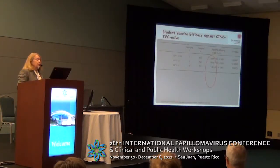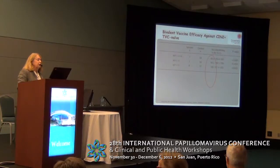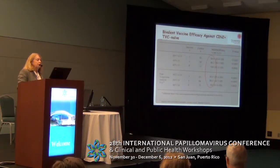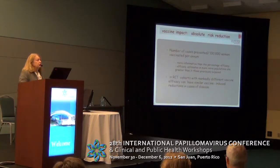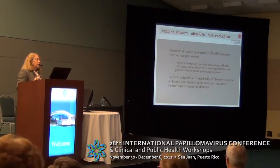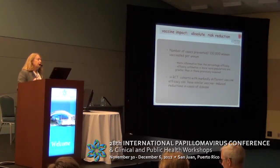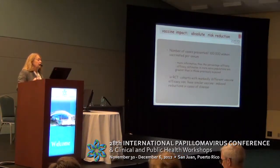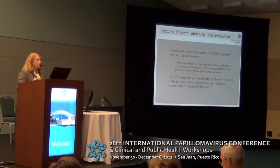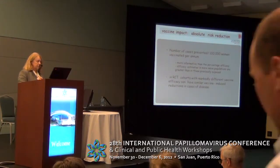For the bivalent vaccine, again for types 16 and 18, you can see very high efficacy for 16/18-related outcomes with very tight 95% confidence intervals. This is all on efficacy. In our chapter in the book, we talk about thinking about absolute risk reduction. Comparing the number of cases prevented per women vaccinated is perhaps more important and informative, particularly when there are differences in population naivety between the trials.